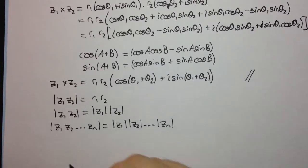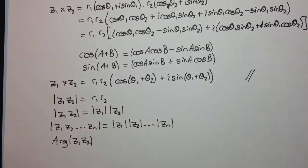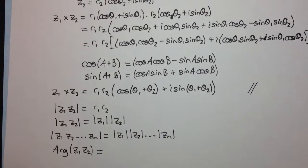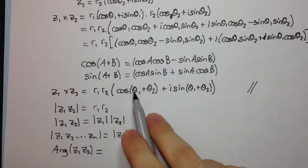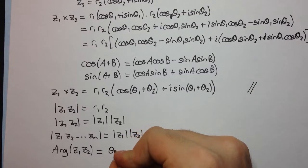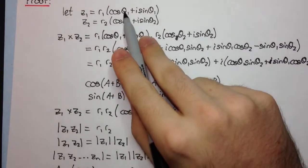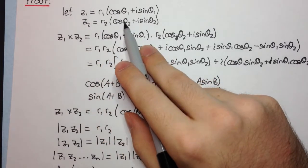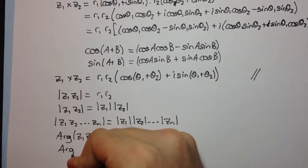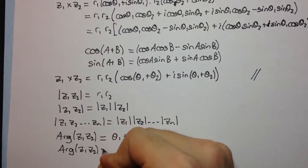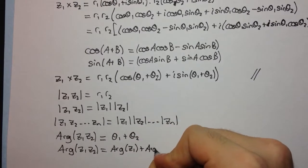Okay, so we've looked at the modulus, now let's have a look at the argument. So, arg of z1 z2, well what's that? Since this is in mod arg form, it's just the angle of these cos and sine. So, that's equal to theta1 plus theta2. But once again, what's theta1 and theta2? Theta1 is the argument of z1, and theta2 is the argument of z2. And so we have that the argument of z1 z2 is equal to argument of z1 plus arg of z2.